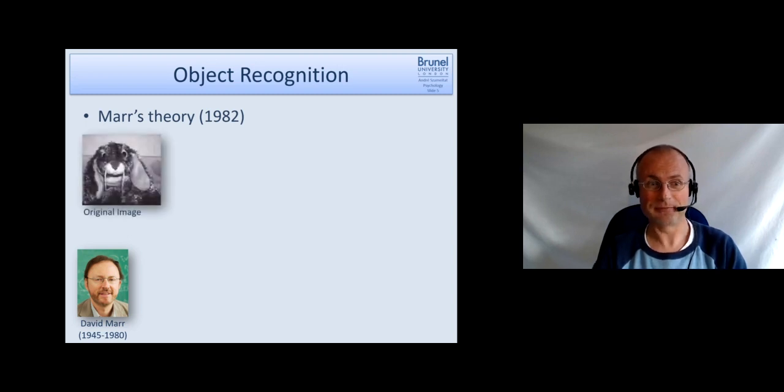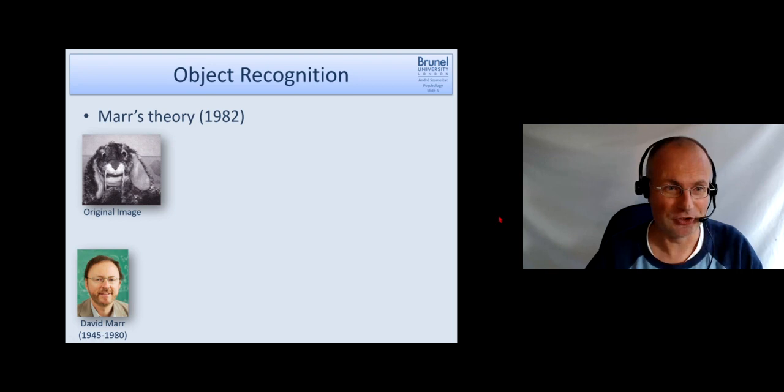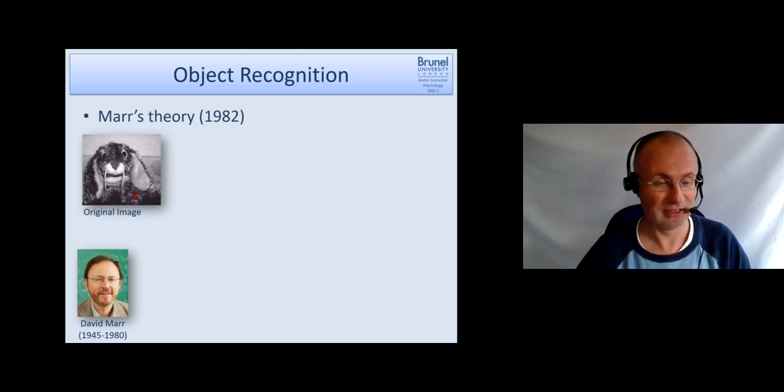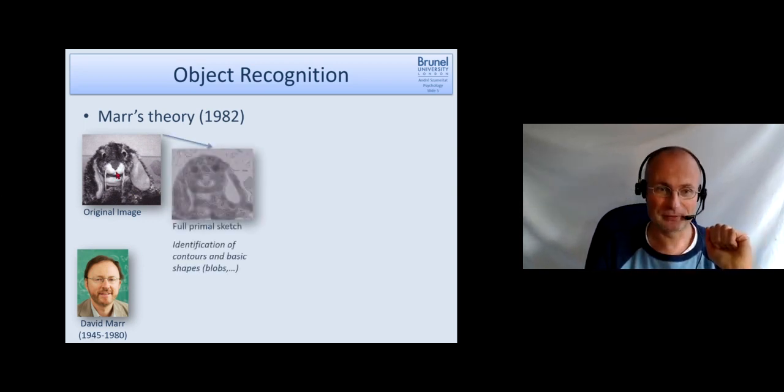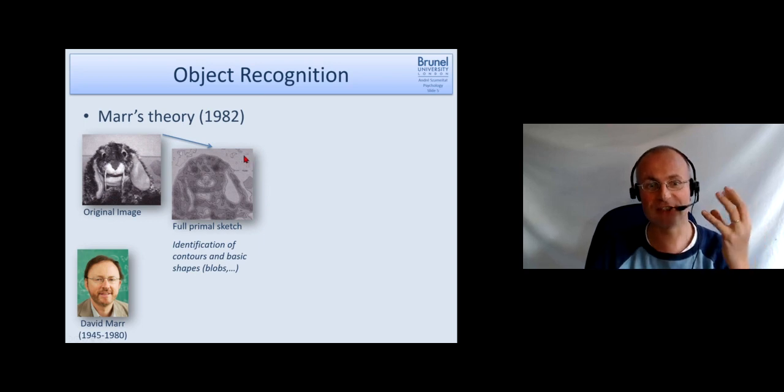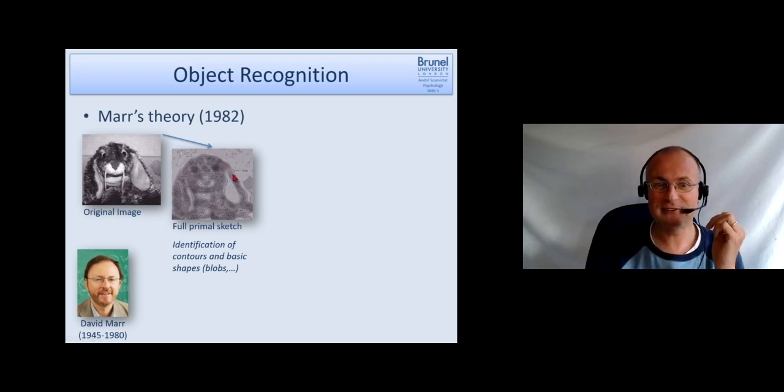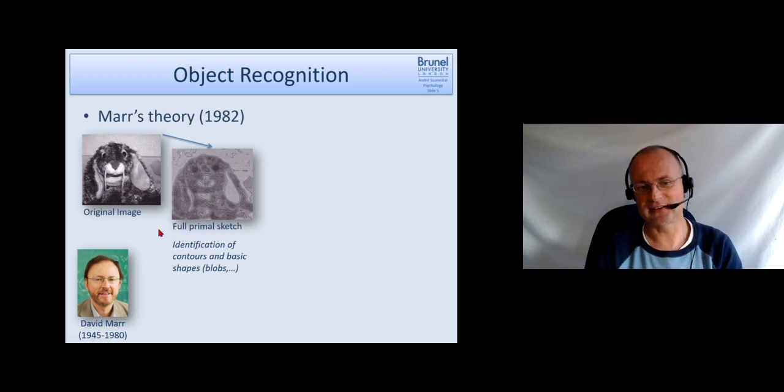So his theory was suppose we see an image like that which is like a plush rabbit and he proposed that the processing of that object happens in several stages. The first stage is what he called a full primal sketch where like the primary visual cortex basically would do, we identify contours and very basic shapes like blobs here or here for the eyes things like that.